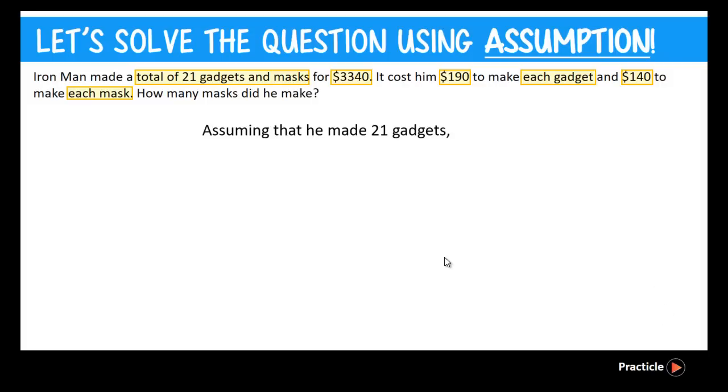This means that he made a total of 21 gadgets. And then, we go on to find the cost of the 21 gadgets. Here, what we do is to take 21 times the cost of one single gadget, which is $190. So this gives us a value of $3,990. So far, so good?